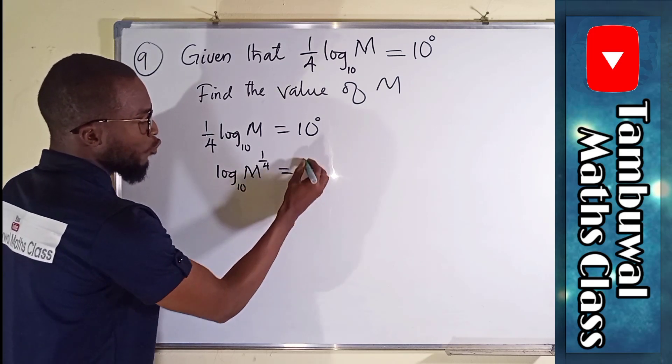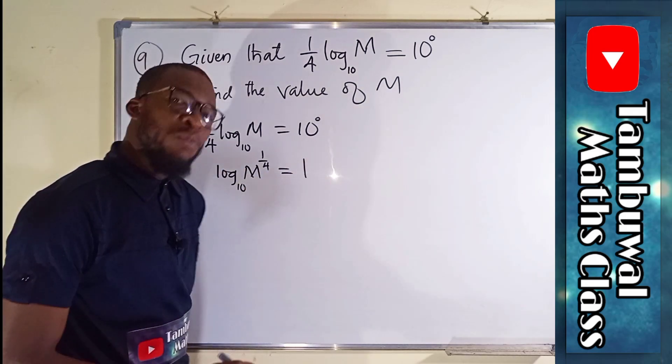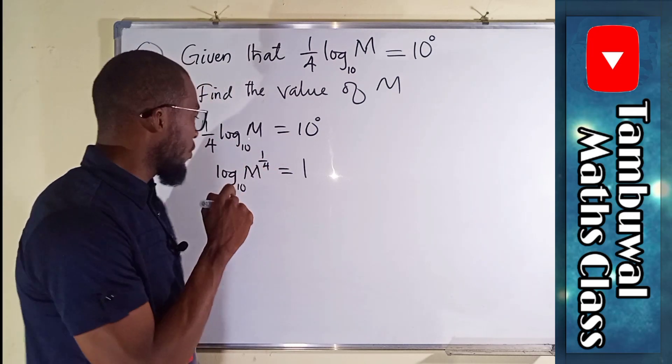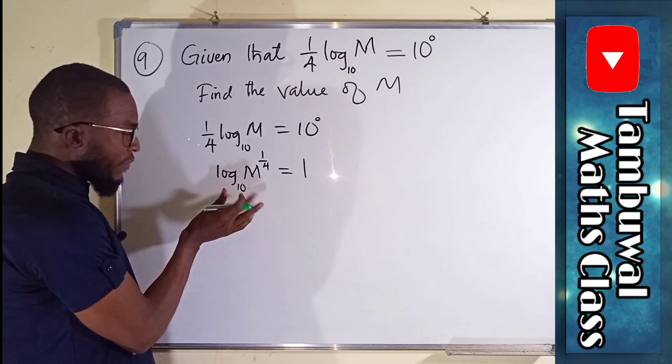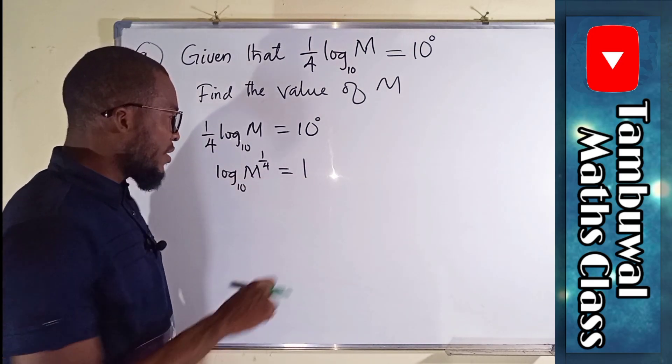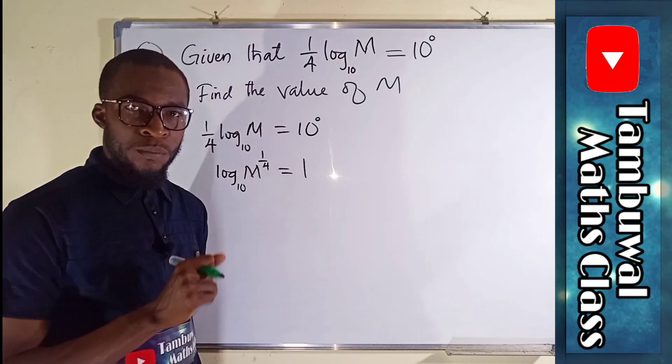This is equal to 1 because any number power 0 is equal to 1 if at all that number is not 0. We have log here, but we do not have log here. So how can we transform this 1 into log form?